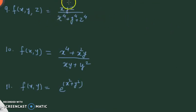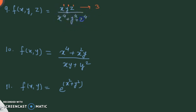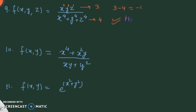For a three-variable example: the numerator has terms each of degree 1 in x, y, z giving total degree 3 (1+1+1). The denominator has three terms each of degree 4 (e.g., x⁴ terms), so denominator degree is 4. Final degree = 3 − 4 = −1. So it is a homogeneous function of degree −1.